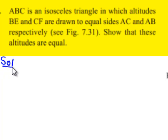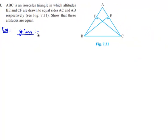Moving on to the solution, let us note down the given information. ABC is an isosceles triangle in which AB is equal to AC, and also given that BE and CF are altitudes to equal sides AB and AC. We are required to prove that altitudes BE is equal to CF.